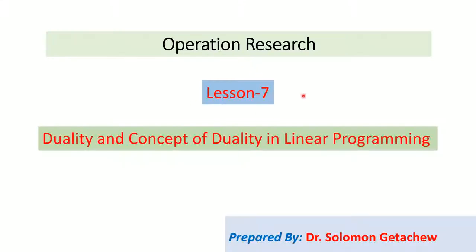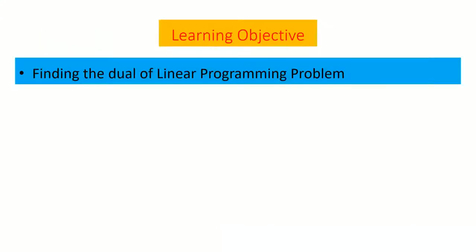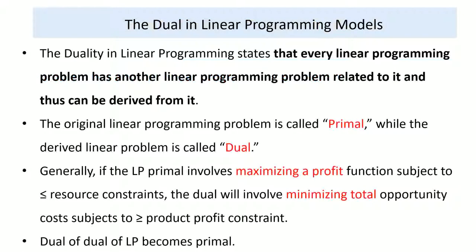Hello everybody and welcome to lesson 7: Duality in Linear Programming. The learning objective of this lesson is to find the dual of a linear programming problem. The dual in the linear programming model states that every linear programming problem has another linear programming problem related to it, derived from the original. The original problem is called the primal, and the derived one is called the dual.